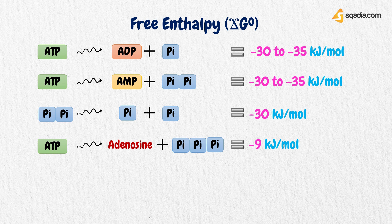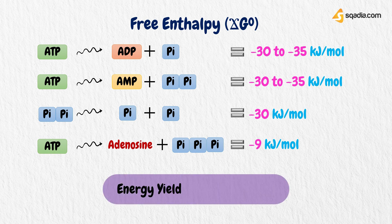In the cell, the delta-G of ATP hydrolysis is substantially larger because the concentrations of ATP, ADP, and Pi are much lower than in standard conditions, and there is an excess of ATP over ADP. The pH value and magnesium ion concentration also affect the value of delta-G. The physiological energy yield of ATP hydrolysis to ADP and inorganic phosphate is probably around minus 50 kilojoules per mole.